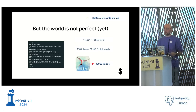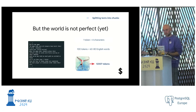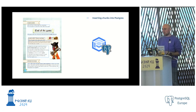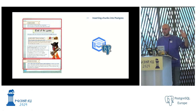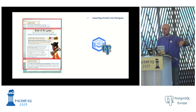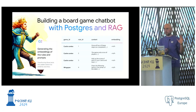Tokens also matter for cost — the amount of tokens you feed to an API is the amount of money you pay. So we need to be smart about chunking. The chunking strategy affects both performance and accuracy. For this use case I decided to split not by page but by paragraph: every title and the text below it becomes one row in my Postgres table.